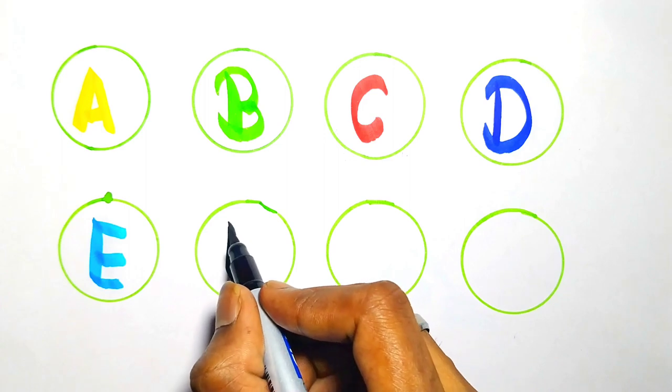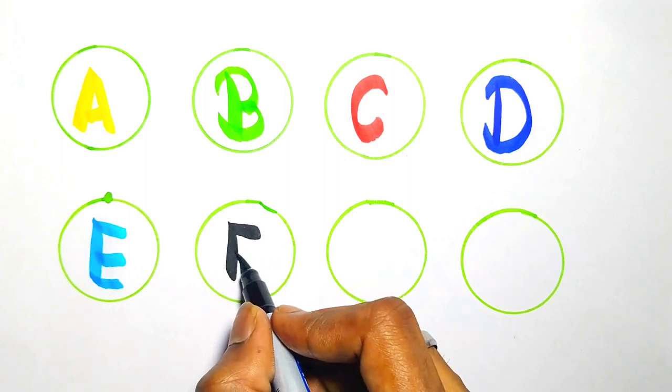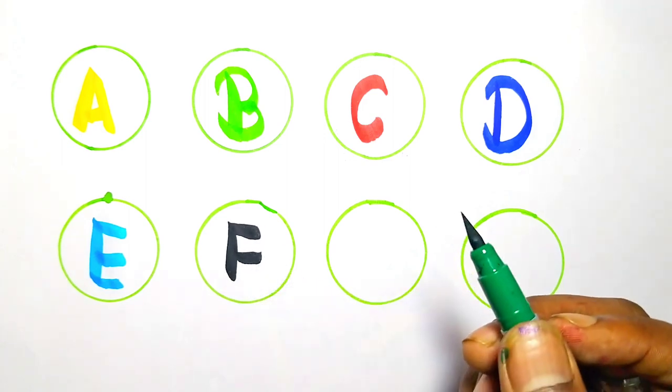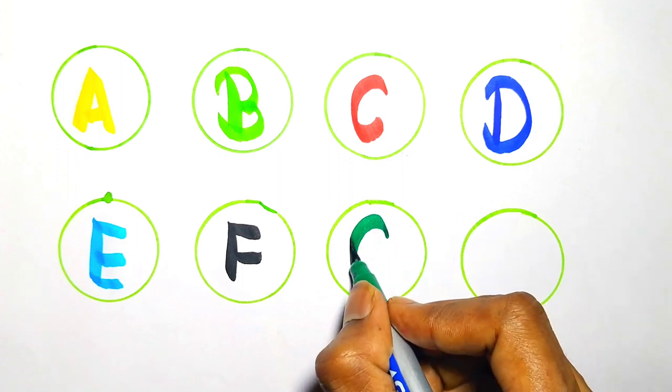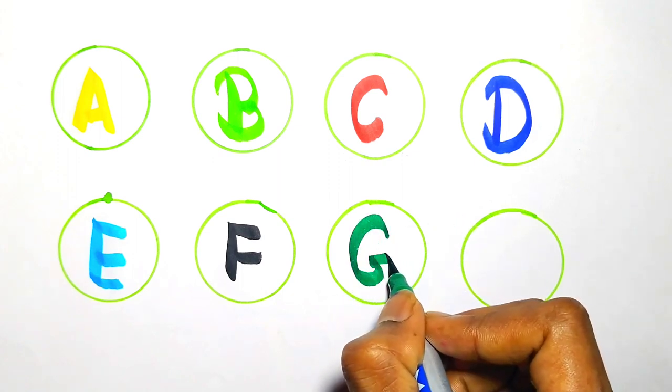F. F for face. Dark green color, G. G for grapes.